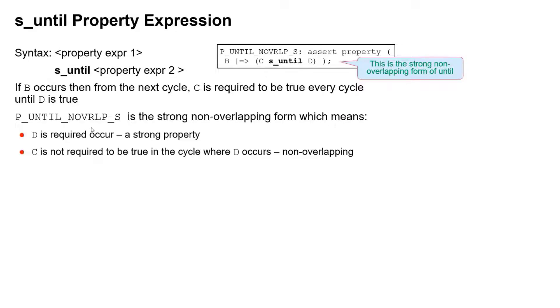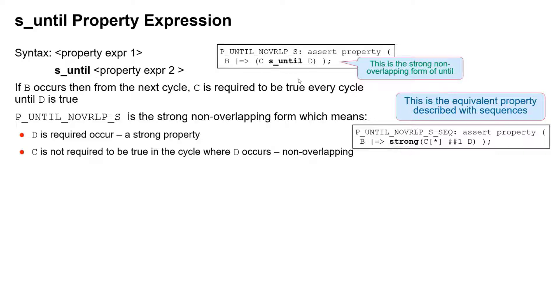S-underscore on the beginning of a property was introduced in the 2009 language reference manual. This is a strong operator — there are many LTL operators with S-underscore on the front, meaning strong. The only thing different about this example is we've got S_until, making this a strong non-overlapping form. If B occurs, then from the next cycle, C is required to be true every cycle until D is — just like before — but because it's a strong form, D is required to occur. The whole right-hand side must complete for it to be a pass. Because it's not the overlapping form, C is not required to be true in the cycle where D occurs. The sequence equivalent wraps the previous sequence in the keyword strong, meaning that sequence must complete. It's easier to understand what the sequence property is doing rather than memorizing what S-underscore does.